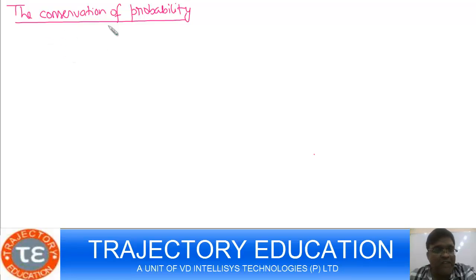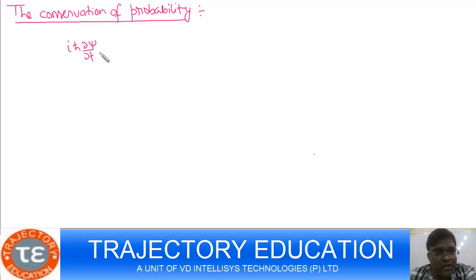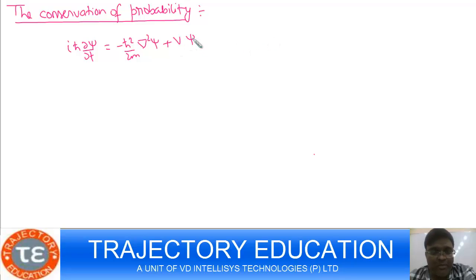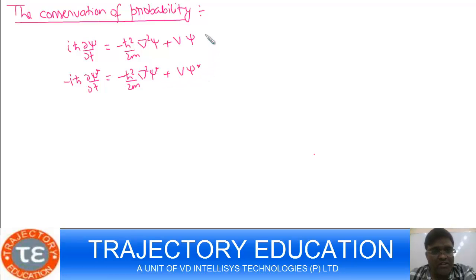In quantum mechanics we will have a similar expression. Let's derive the equation of continuity which signifies conservation of probability. We write the Schrödinger wave equation: −(ℏ²/2m)∇²ψ + Vψ = iℏ ∂ψ/∂t. Since the potential V is a real quantity, taking the complex conjugate gives: −iℏ ∂ψ*/∂t = −(ℏ²/2m)∇²ψ* + Vψ*.